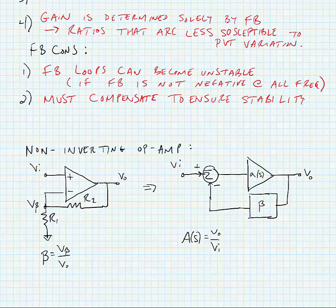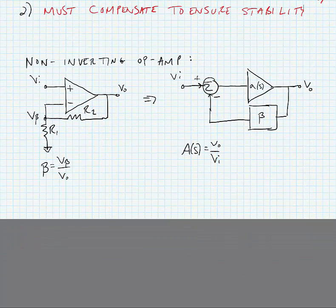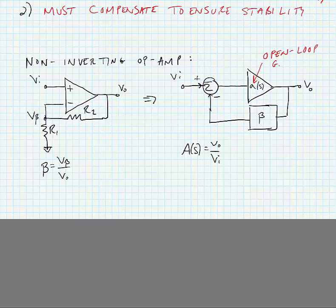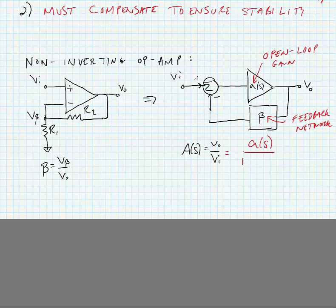Let's remind ourselves of a few terms by looking at this non-inverting op-amp. We've already shown that we can model a non-inverting op-amp as a feedback circuit that has some positive gain and some feedback. Here we're showing a positive gain as A sub-s, which is the open loop gain of an op-amp, and it has some frequency dependence. We're feeding back through a network that has no frequency dependence. If we calculate the gain of this amp, we have it as the open loop gain divided by 1 plus the open loop gain times the feedback factor — that term we called the loop gain.